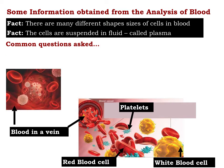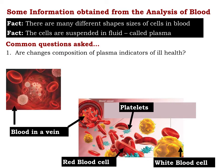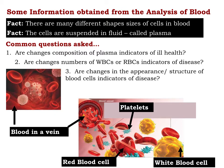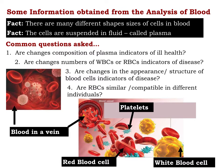And many questions are asked. Are changes in the composition of plasma indicators of ill health? Are changes in the numbers of white blood cells or red blood cells indicators of disease? Are changes in the appearance and structure of blood cells indicators of disease? Are red blood cells similar and compatible in different individuals? And many more questions, which I hope this module will answer.